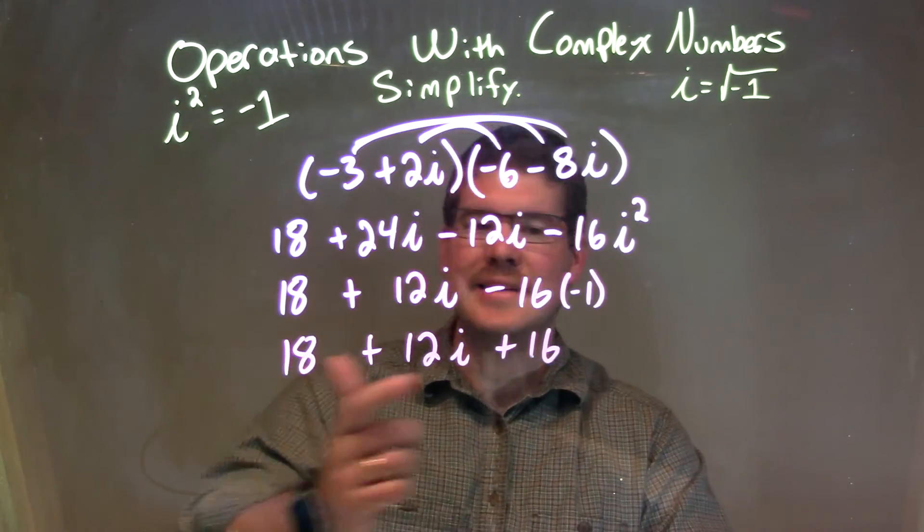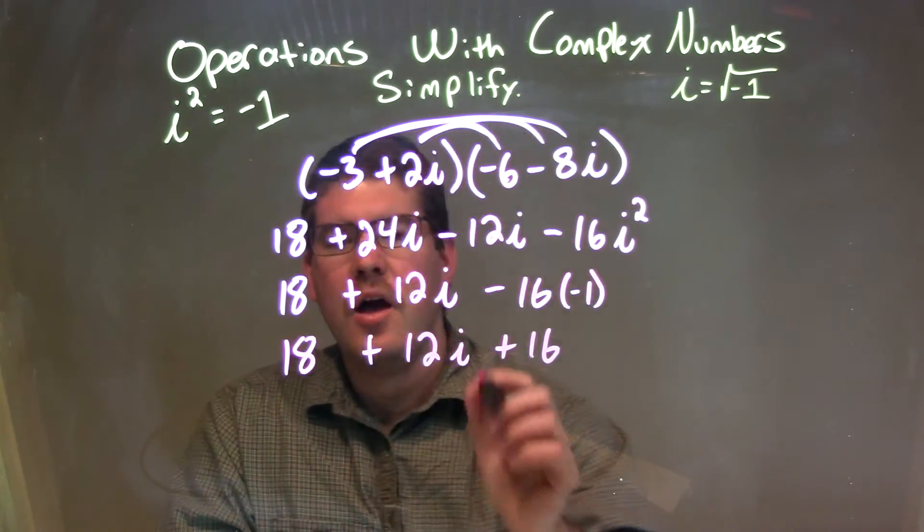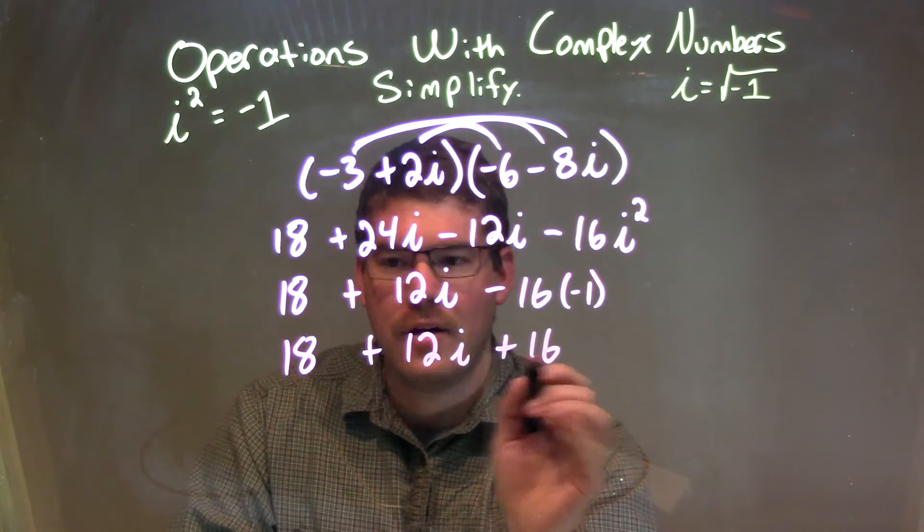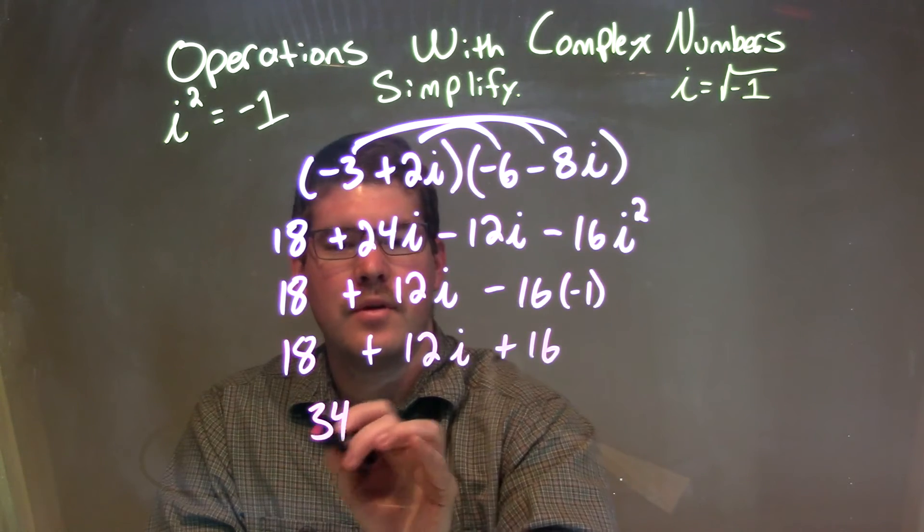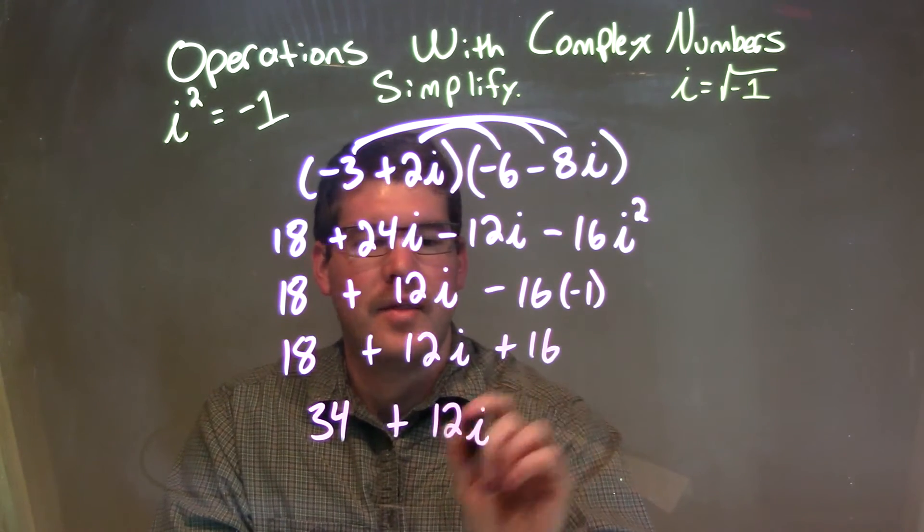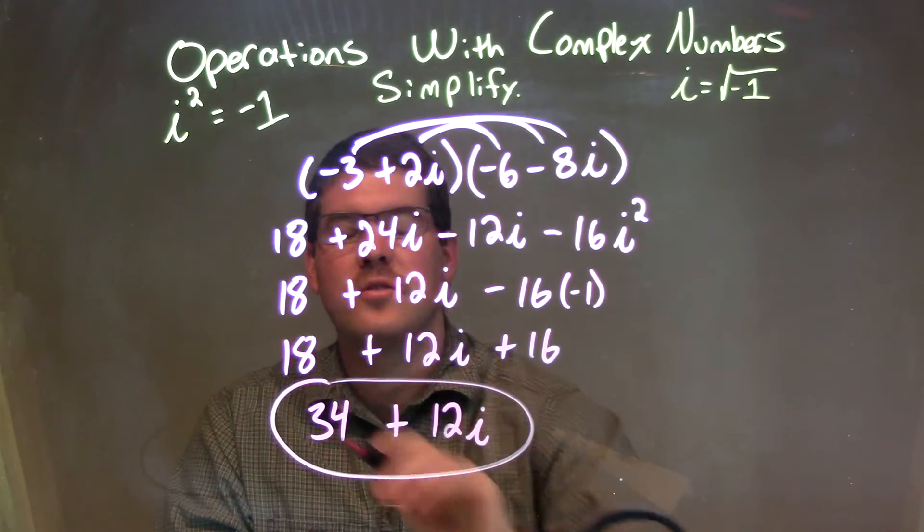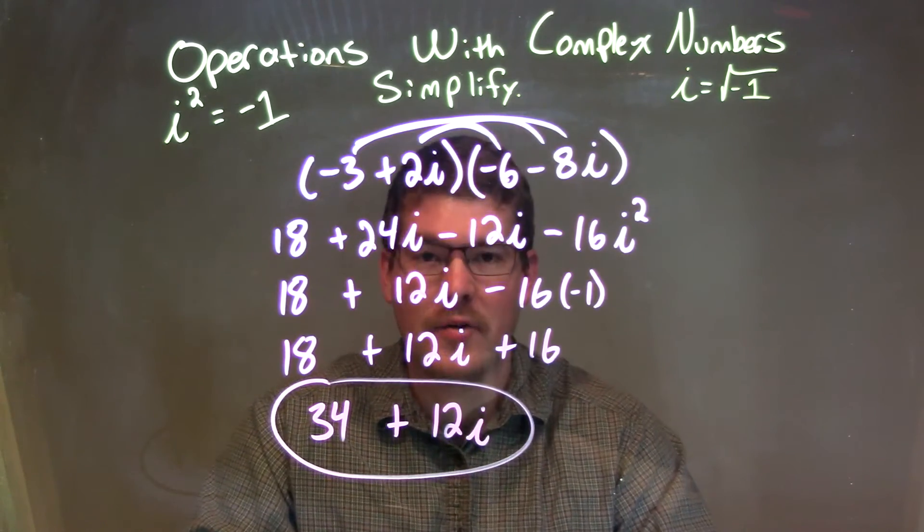So, now let's go combine 18 and 16 together. And that comes out to be, there's a 4 there, carry the 1, 34. 34 plus 12i, and there we have it. Our final answer here is 34 plus 12i.